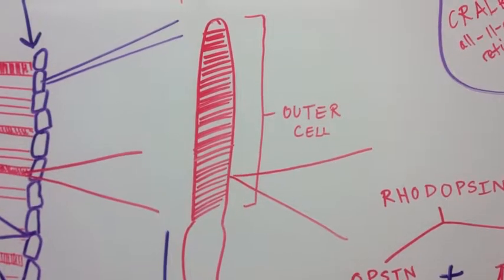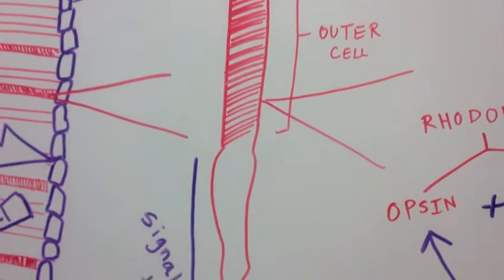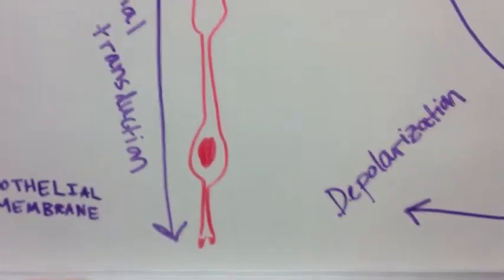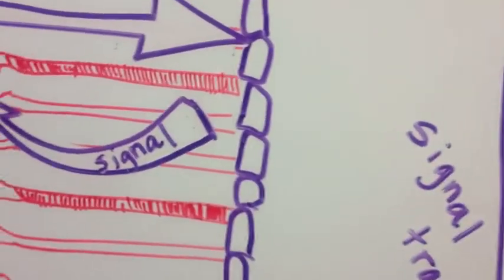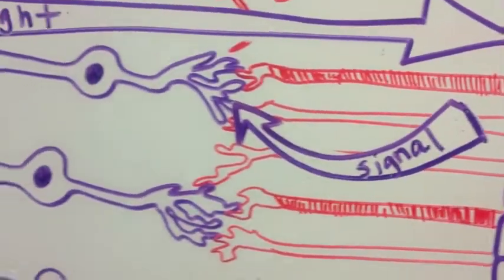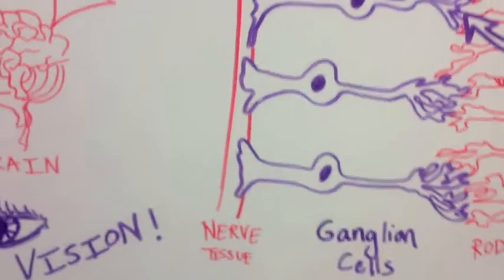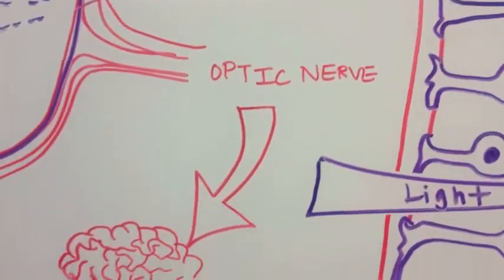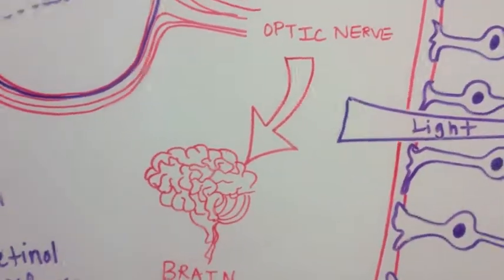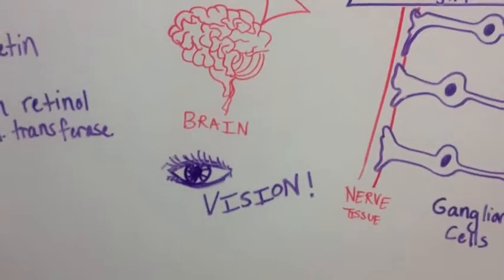The signal travels through the axon of the photoreceptor cell and into the ganglion cells of the nerve tissue and then travels to the optic nerve, which goes to the brain and creates the perception of vision.